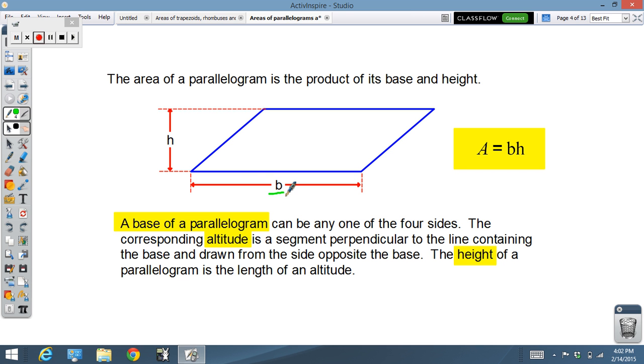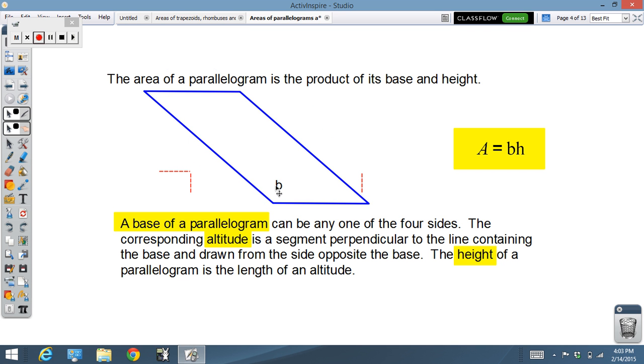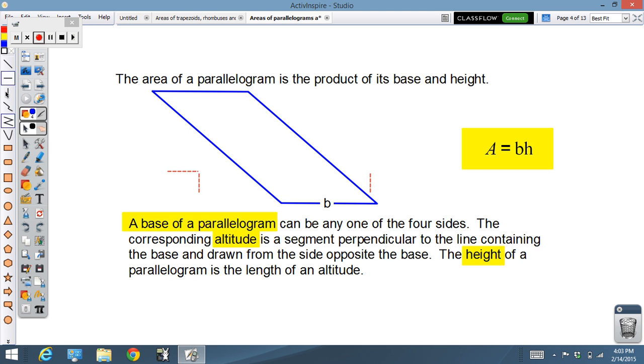Now keep in mind a base can be any one of the four sides. We've got this one labeled as a base, but we could also consider this to be the base. And for both of those the height is the perpendicular distance between one base and the other. However, we can also consider this to be the base. Is it easy now to see how the short side could also be considered a base? And if that's a base then the height would still be the perpendicular distance from the opposite side down to a line containing the base.